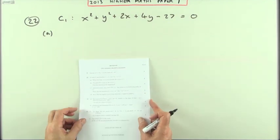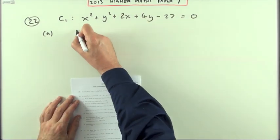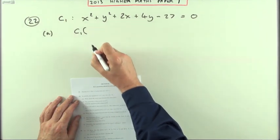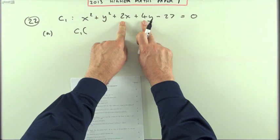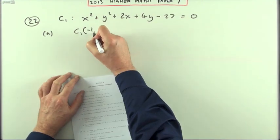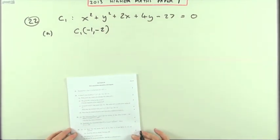First part, write down the centre and calculate the radius, because you can state the centre straight away. Maybe I'll just refer to the centre as C1, because it's simply half of these coefficients of x and y made negative. So it'll be negative 1, negative 2. That's just a statement.